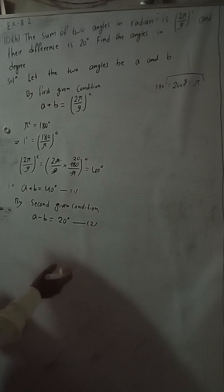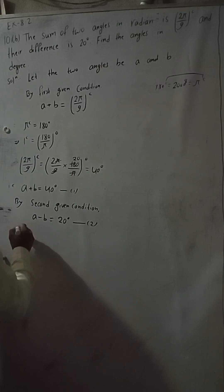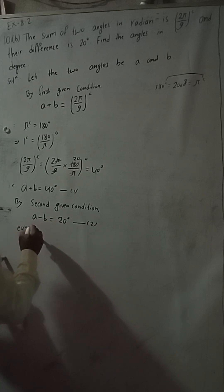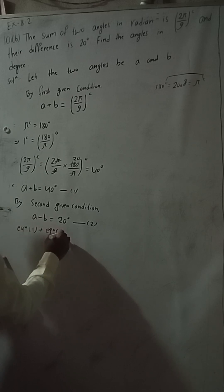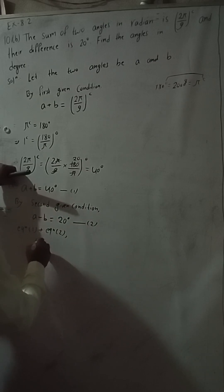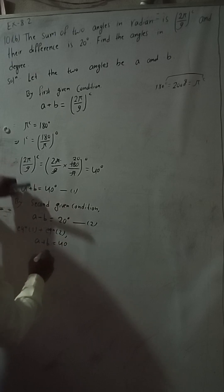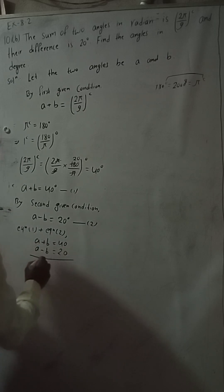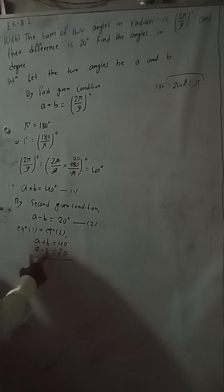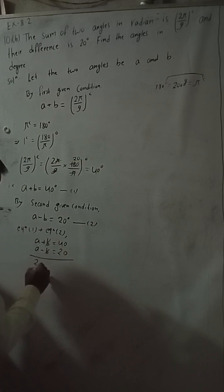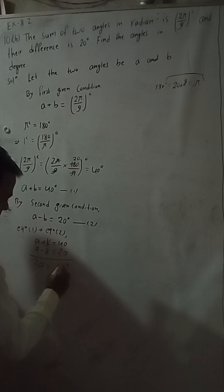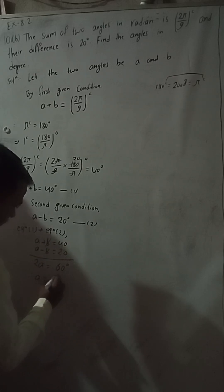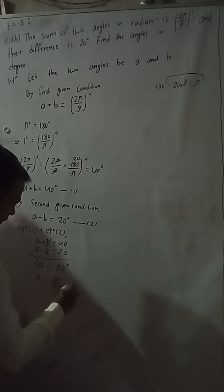Adding equation 1 and equation 2: A plus B equals 40, and A minus B equals 20. If we add, B minus B cancels, and 40 plus 20 equals 60. Therefore 2A equals 60, so A equals 60 divided by 2, which is 30 degrees.